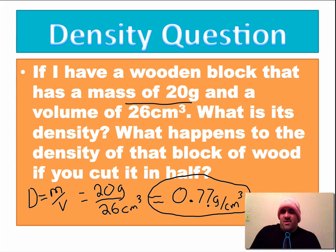And that's going to be incorrect, as we're going to see. So let's take this wooden block here that has a density of 0.77 grams per centimeter cubed and cut it in half.